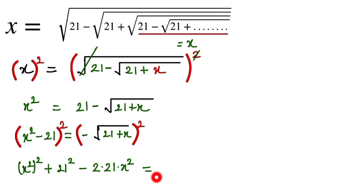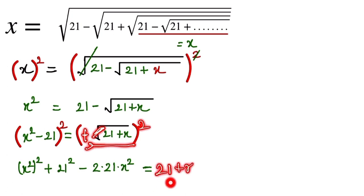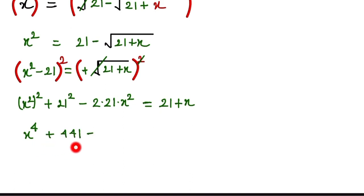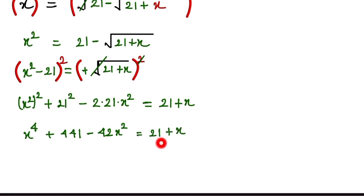The right side: the negative becomes positive and the square root is cancelled, giving us 21 plus x. So expanding the left side: x to the power 4 plus 441 minus 42x squared equals 21 plus x.